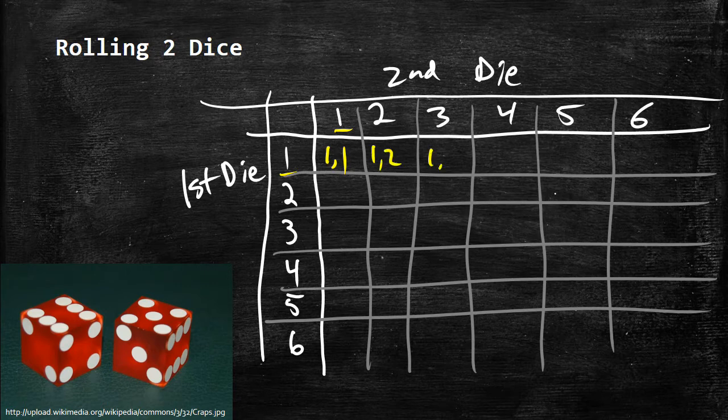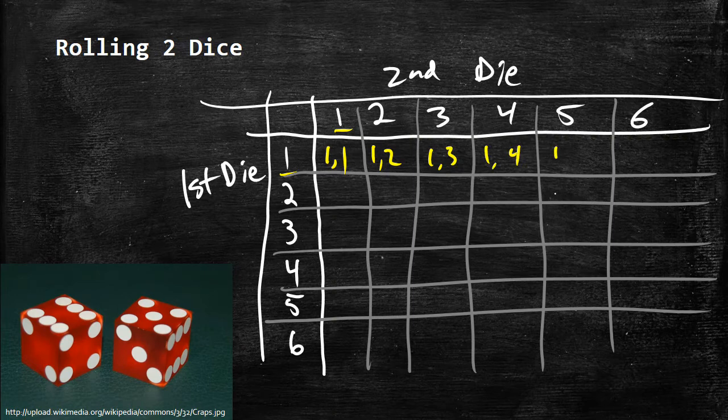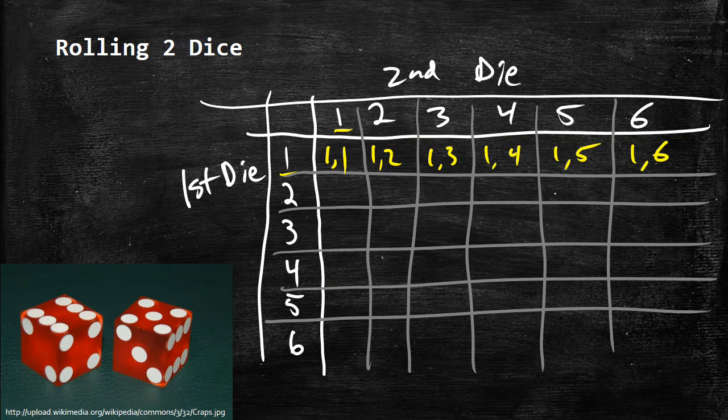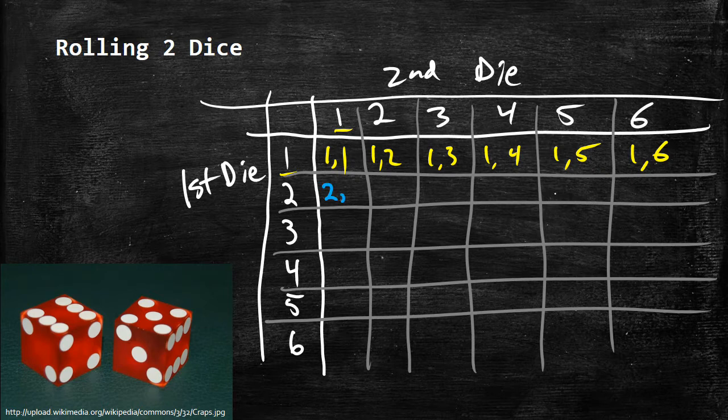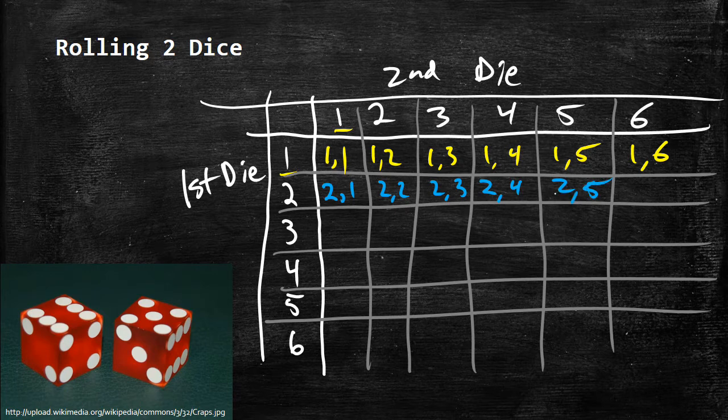Then I can start to go through the entire process of filling out this whole table. I know I can get 1,2 here, 1,3, 1,4, 1,5, 1,6. I'm just going to change colors for the next line. 2,1, 2,2, 2,3, 2,4, 2,5, 2,6. And you kind of get the idea of where we're going with this.